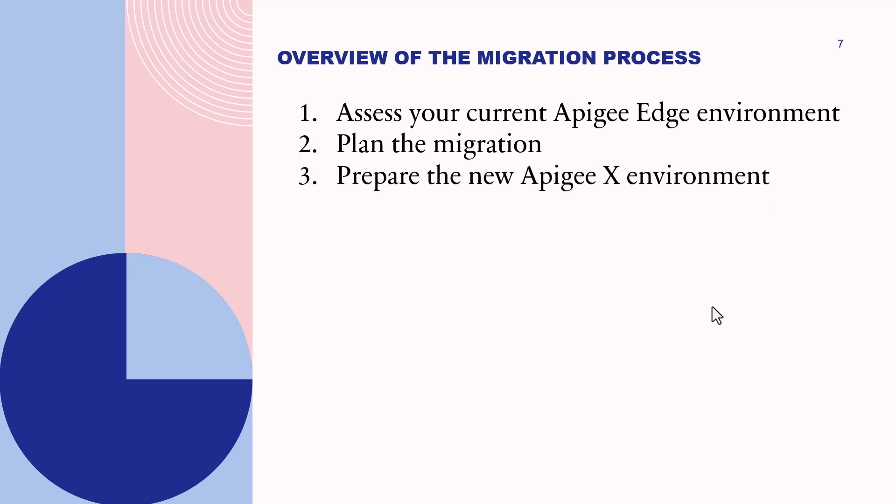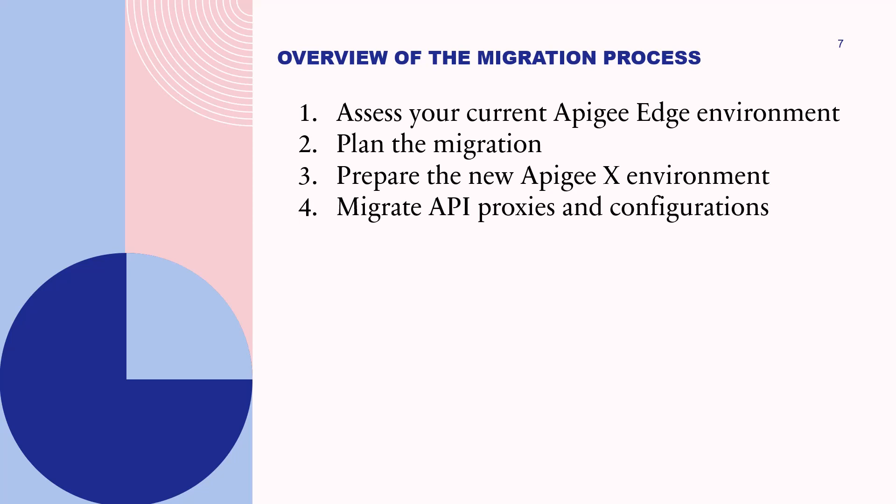Third, prepare the new Apigee X environment by setting up your organization, environments, and runtime instances, and configuring the necessary network settings such as VPC peering, DNS, and SSL/TLS certificates. Fourth, migrate API proxies and configurations: export your API proxies, shared flows, policies, and configurations from Apigee Edge and import them into Apigee X. Modify any deprecated features, policies, or configurations as needed, and test the imported proxies in Apigee X to ensure they function properly.